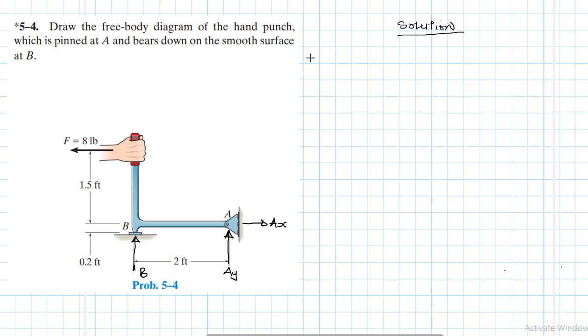So to start with, I'm going to take moments about point A, taking clockwise being my reference positive. So what do I have? I have a negative moment due to B, this is B times 2 feet.